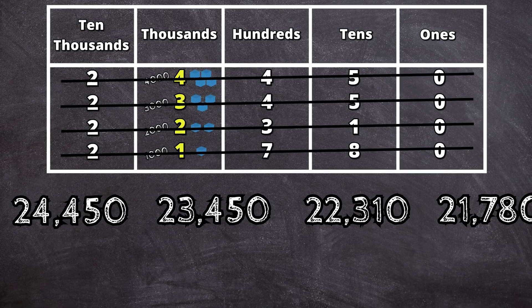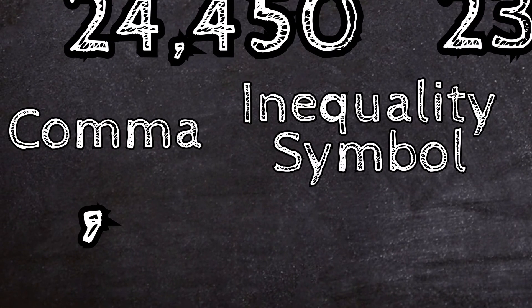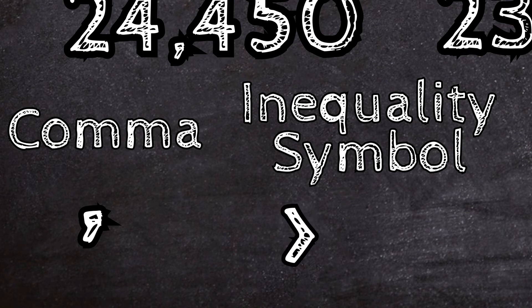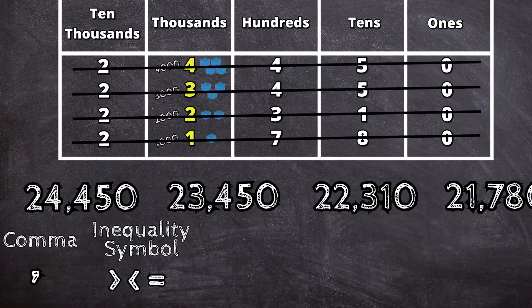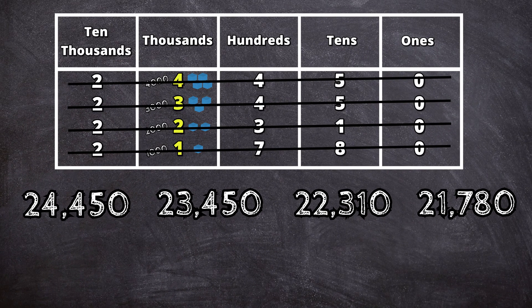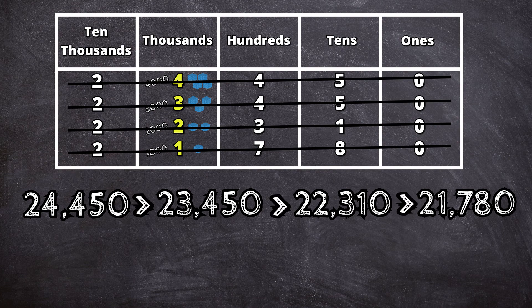We can place these numbers in order using either a comma or an inequality symbol. The three inequality symbols are greater than, less than, and equal to. Since we place these numbers in order from greatest to least, we will use the inequality symbol greater than.